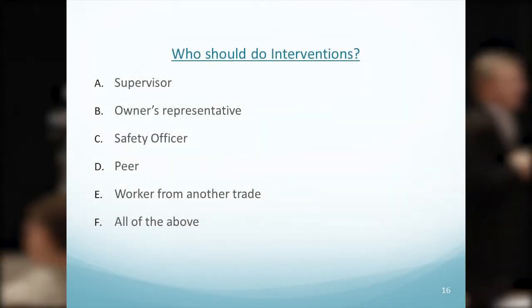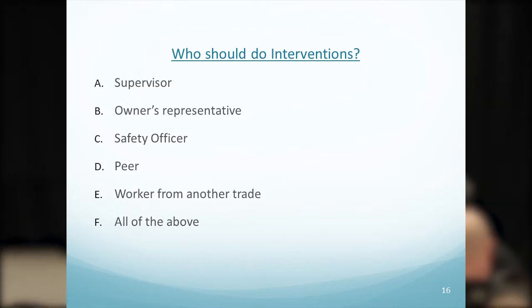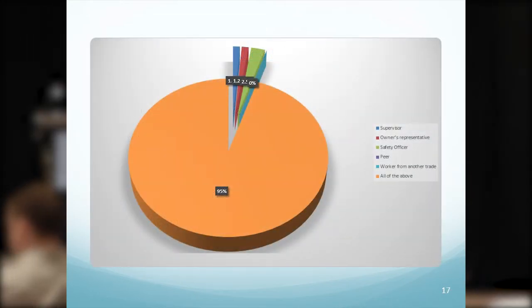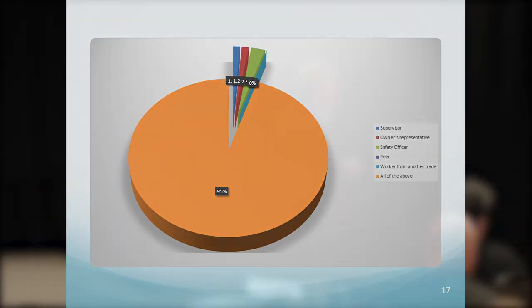Who should do interventions? The supervisor, the owner's rep, the safety officer, a peer, a worker from another trade — or any of the above? There wasn't much question there. You shouldn't be afraid to intervene regardless of whether you're a co-worker or from another trade. Going back to whether you need to know the intricacies of the task — the answer is no. If an electrician sees an unsafe situation by a carpenter on a roof, he may not know the intricacies of the job, but there's nothing stopping him from intervening.